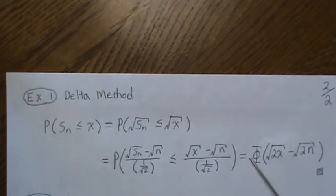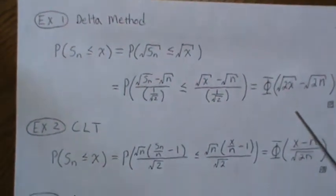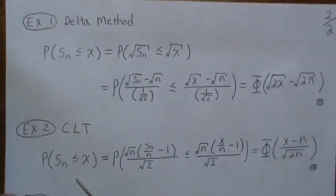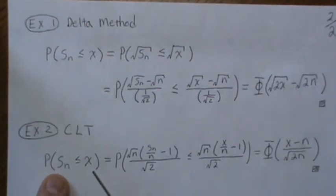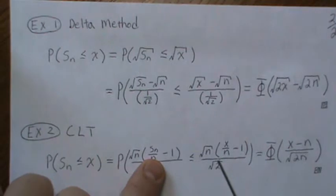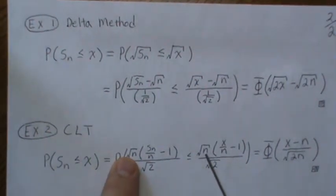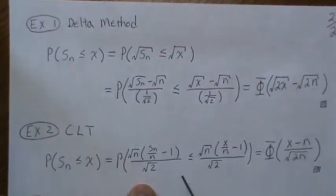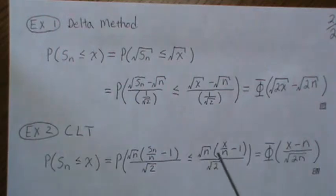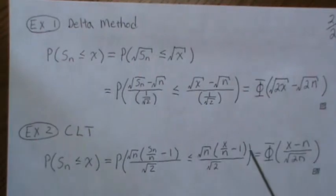The Central Limit Theorem: if we want to find this probability, we divide both sides by n, subtract the mean, multiply by the square root of n, divide by the standard deviation. Then this is a standard normal, so we can plug this into the cumulative distribution function.